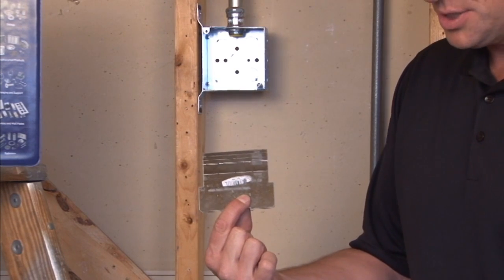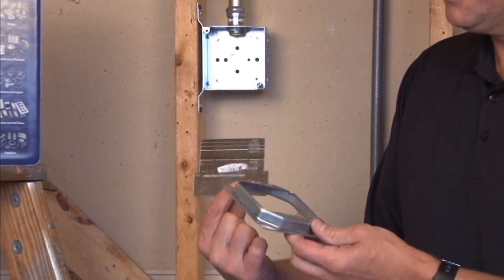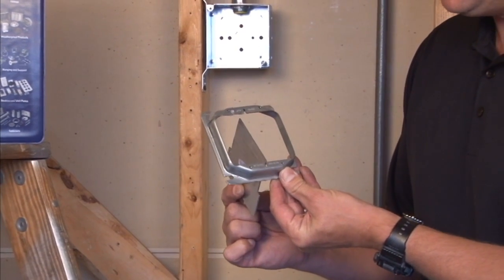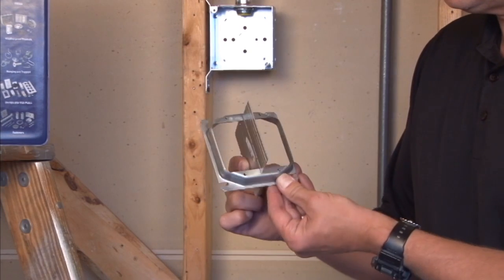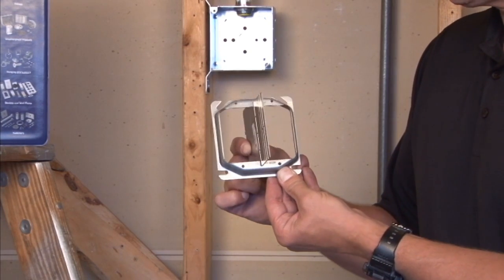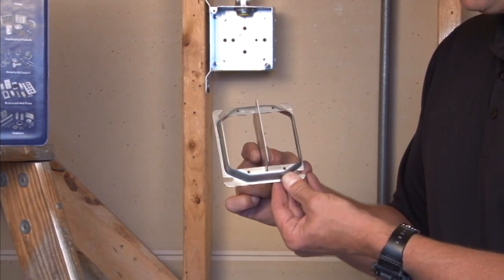The easiest way to install this product is to take your two gang plaster ring and slide the partition through the slot prior to installing the ring on the box.